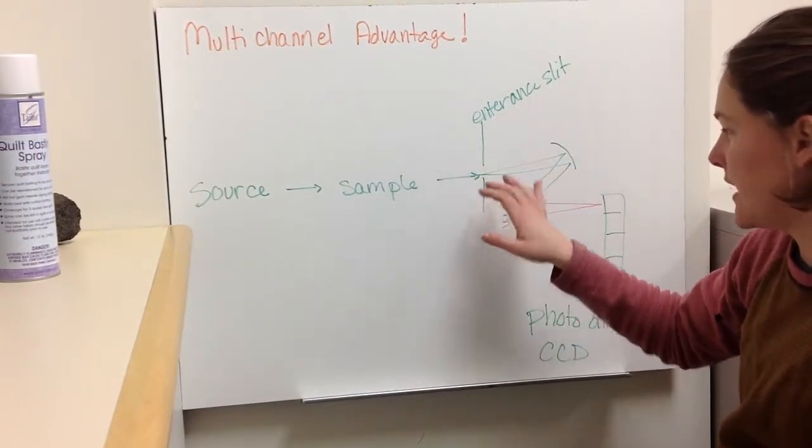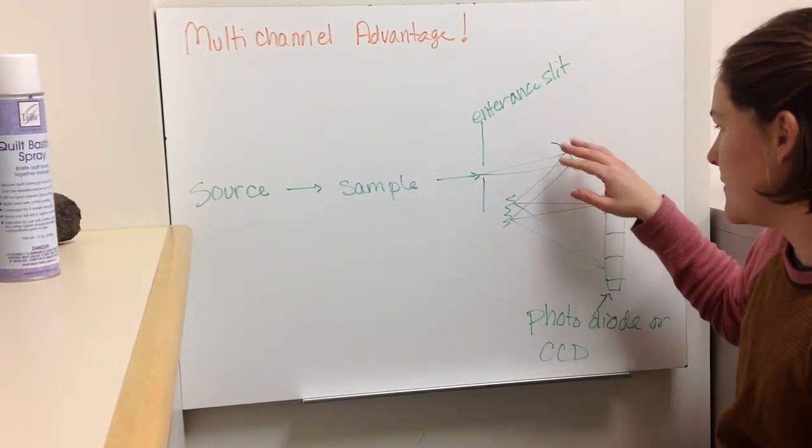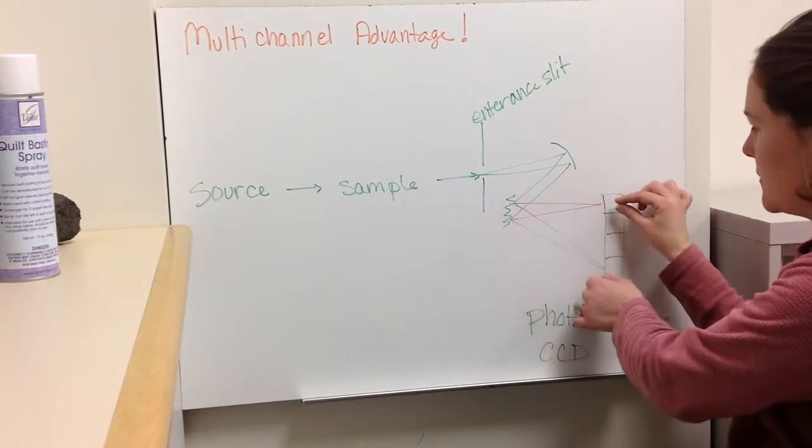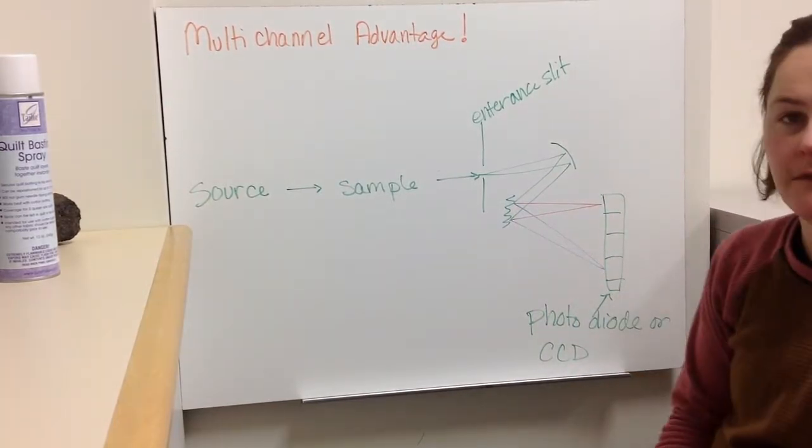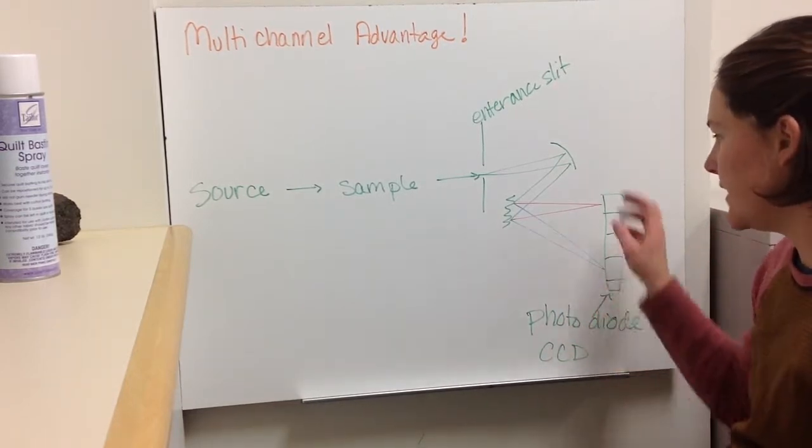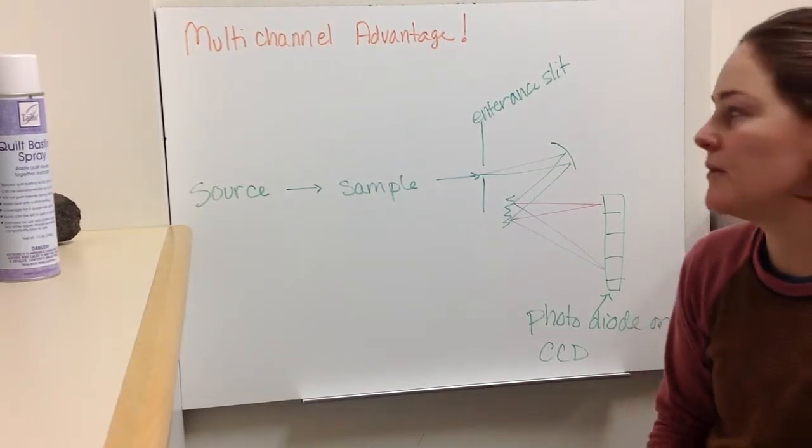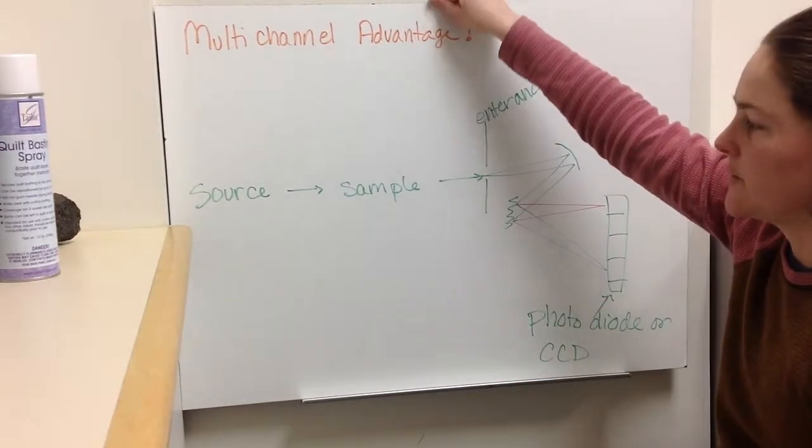And then your light would come in through an entrance slit, just like with a monochromator, and then get bounced off a mirror, collimated, and then the wavelength dispersed light gets put onto a photodiode or a CCD. And so you can actually detect all of these wavelengths all at the same time, which is very exciting because it's much faster and much easier to do it this way. You can detect them all at once. So that's pretty cool.